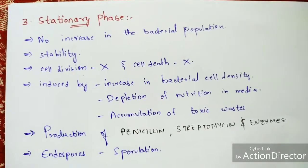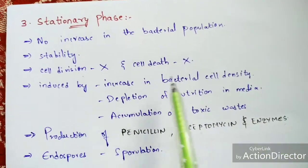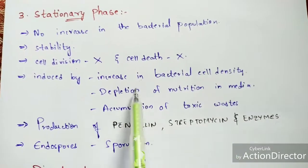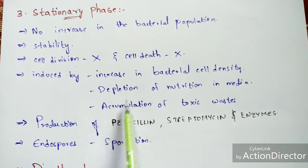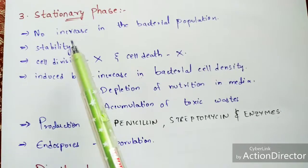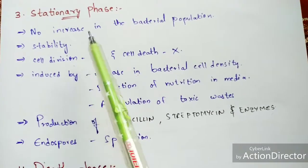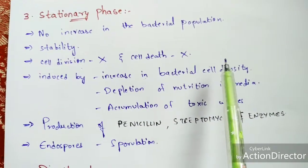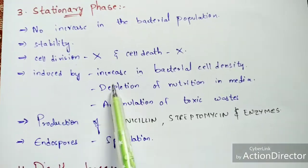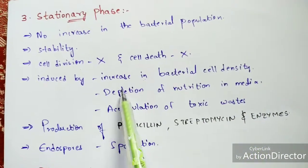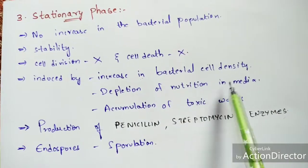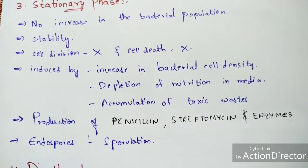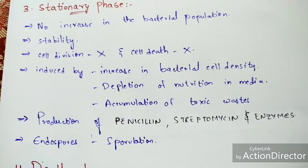The daughter cells remain stable — they do not undergo cell division or cell death (apoptosis). The stationary phase is induced by an increase in bacterial cell density, depletion of nutrition in the medium, and accumulation of toxic waste. The density has already increased due to daughter cell formation, and the cells no longer have capacity to form further daughter individuals. Nutritional media become depleted, and secondary metabolites accumulate as toxic waste.